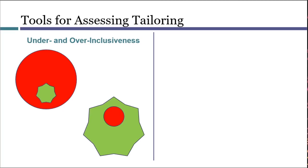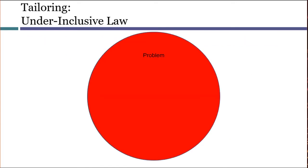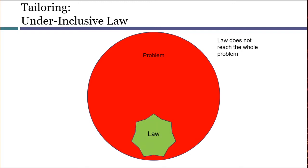One tool asks whether the law is over-inclusive or under-inclusive. The other tool asks whether there are less discriminatory alternatives. Under-inclusion and over-inclusion involve comparing the problem that the government identified — that will be part of its government interest — with the law that was chosen to deal with that problem. For example, in Carolene Products, the stated government interest was a belief that it was not healthy to substitute vegetable fat for milk fat. Even if we accept that as legitimate, banning filled milk was not banning all food that substituted vegetable fat for milk fat. Margarine, for example, wasn't banned. So Congress was not solving the entire problem, and that means the law was under-inclusive.